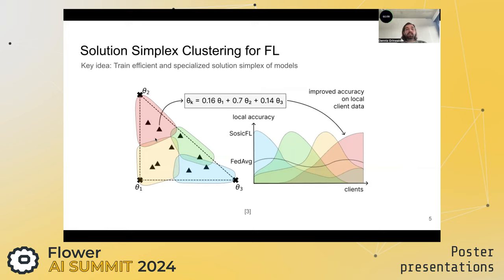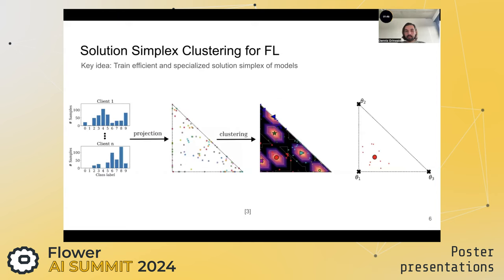We show that this yields improved personalized models for each client. Since we have a whole simplex of models, we can also sample either the midpoint of the whole simplex or an ensemble of models that fits the global test distribution really well. So in our case, we have tackled two problems: the problem of having a personalized model for each client, and a well-performing global model for the global test dataset.